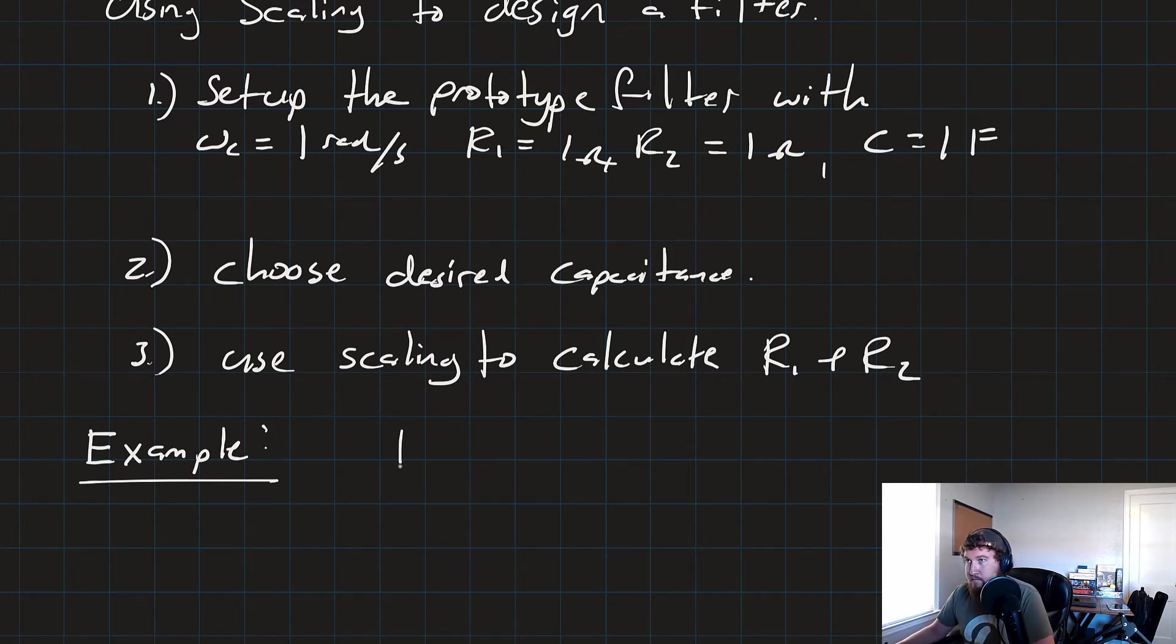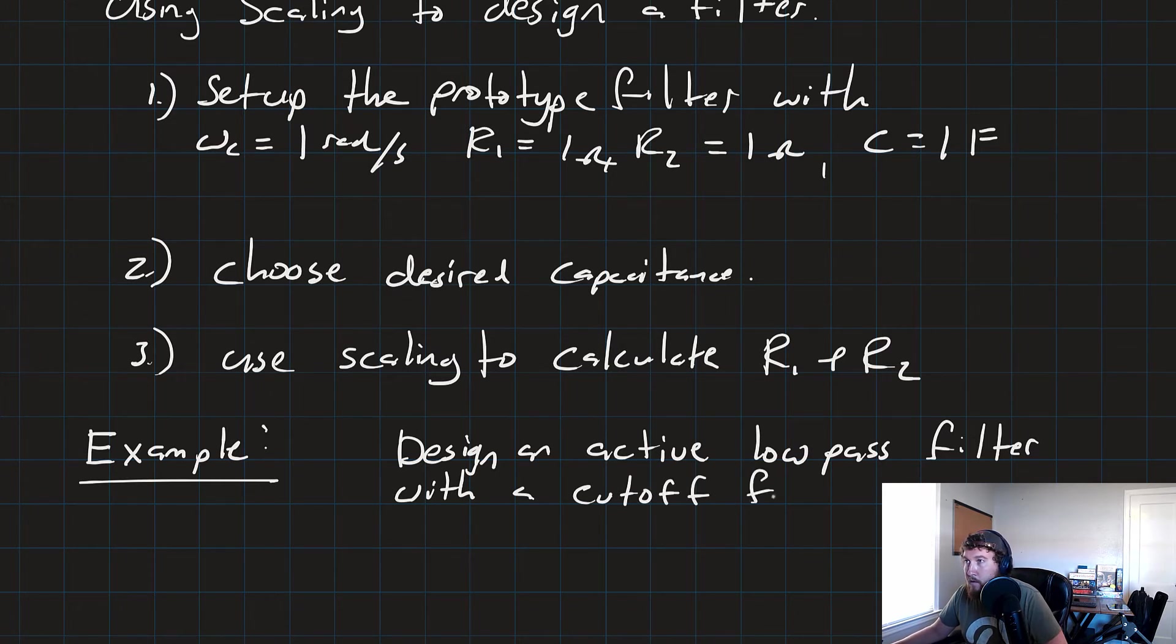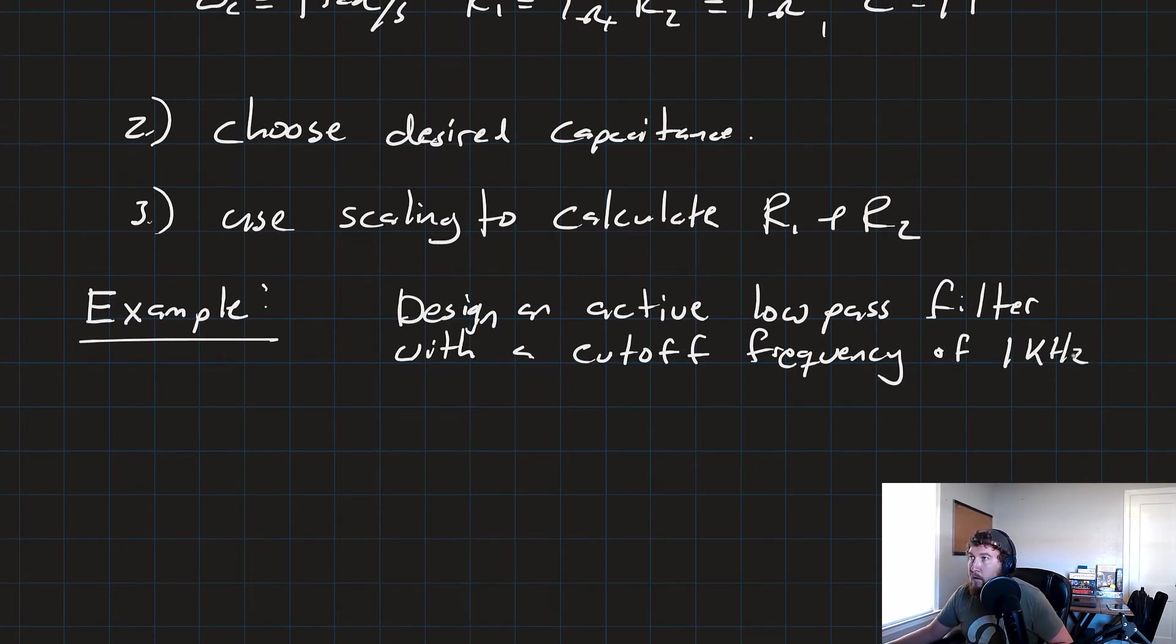So what we want to do here is design an active low-pass filter with a cutoff frequency of 1 kilohertz and a passband gain of 5, and use a 10 nanofarad capacitor.